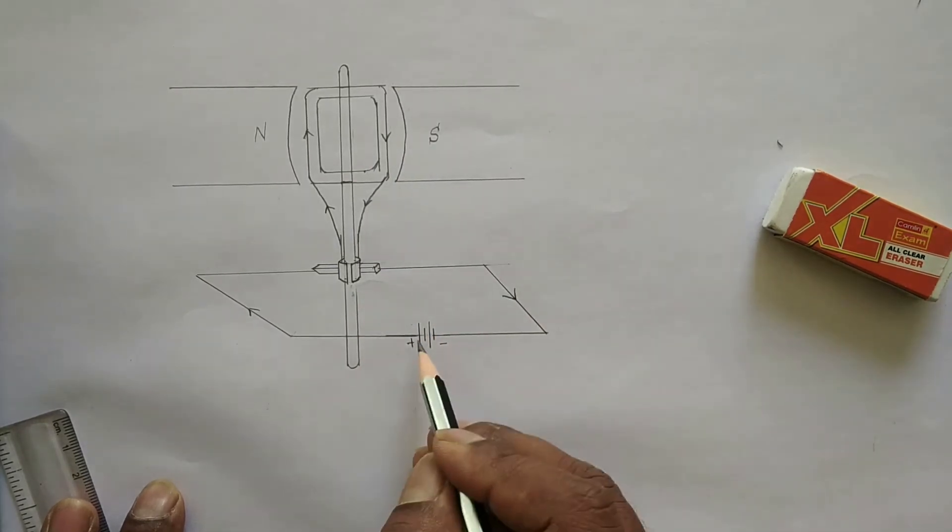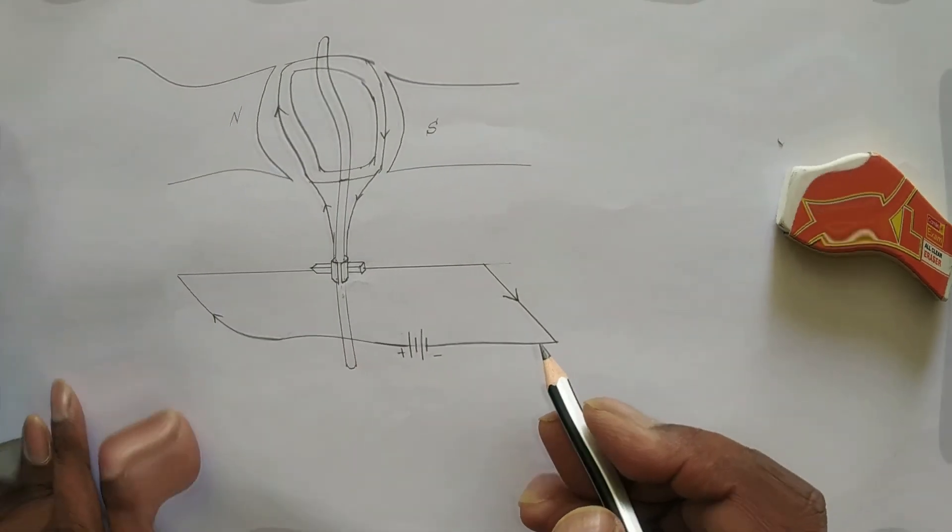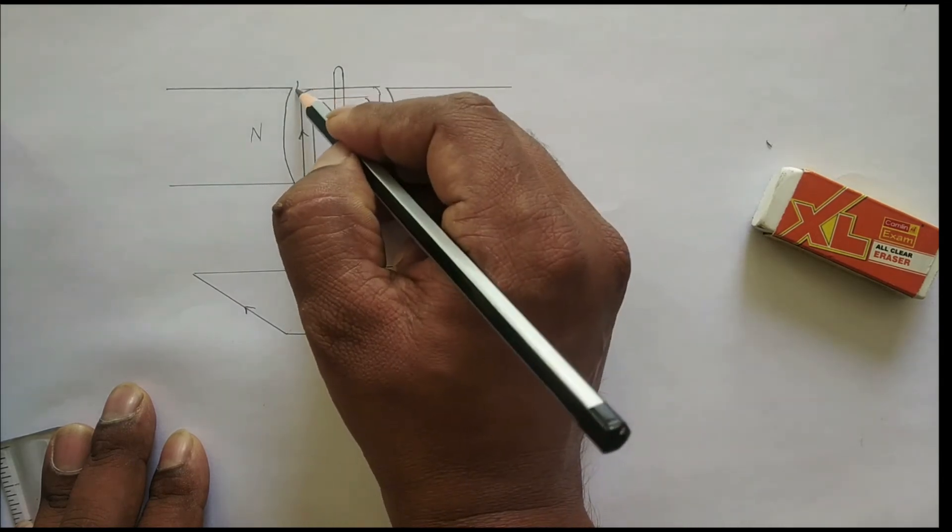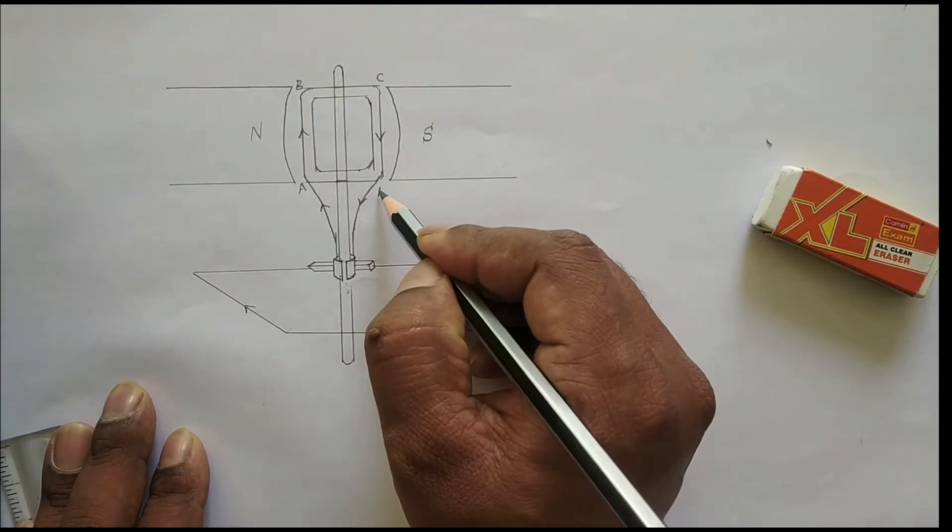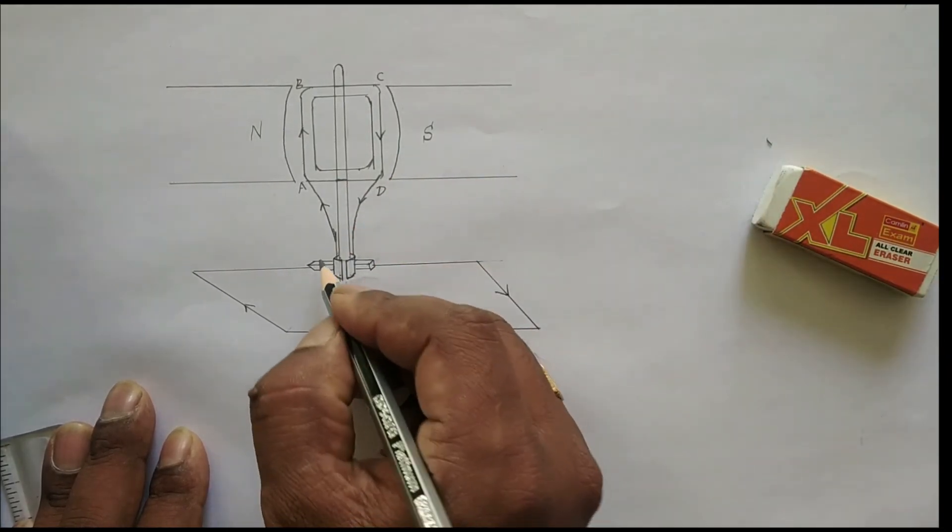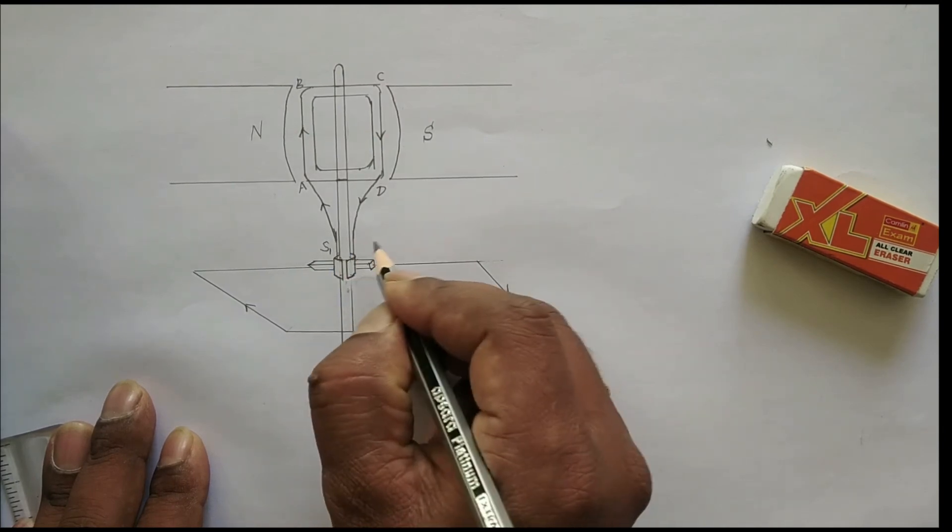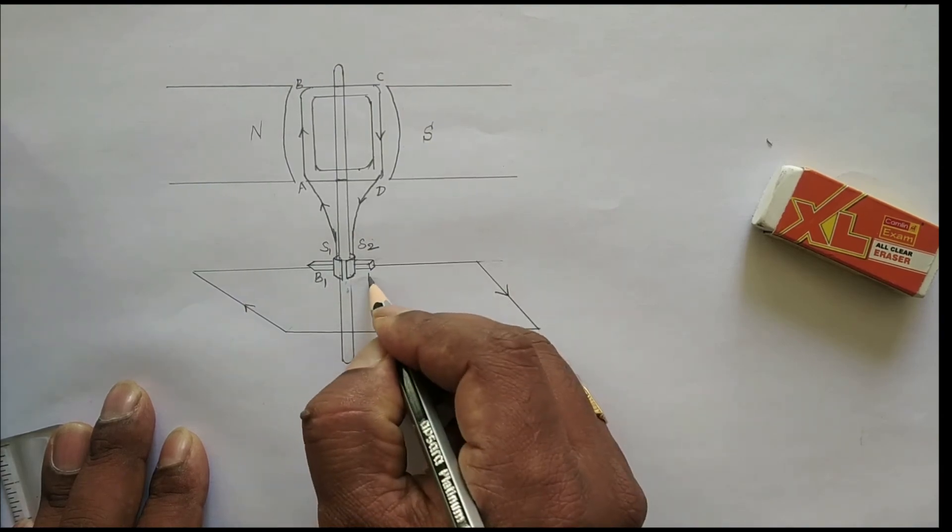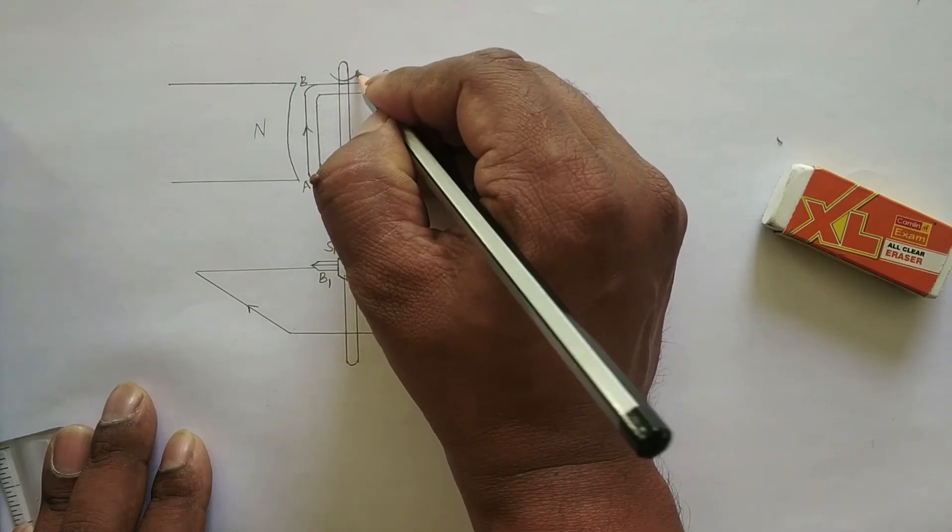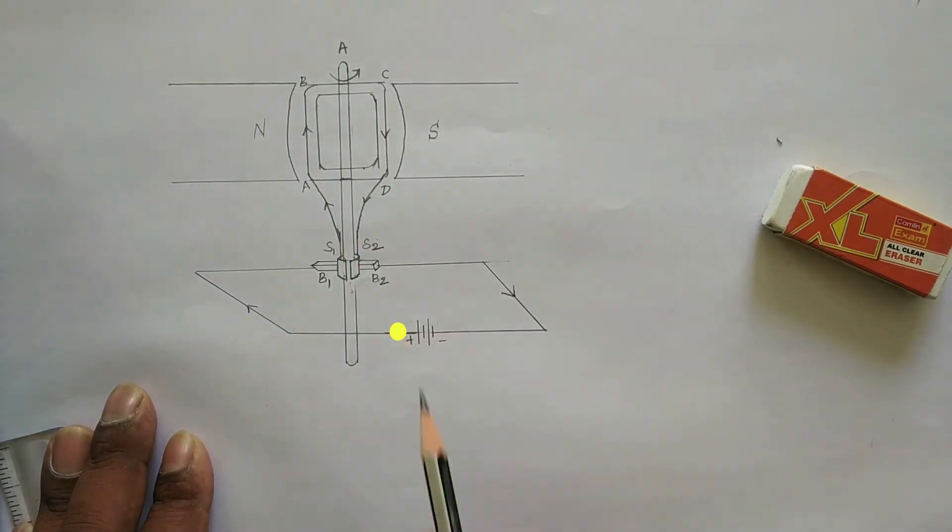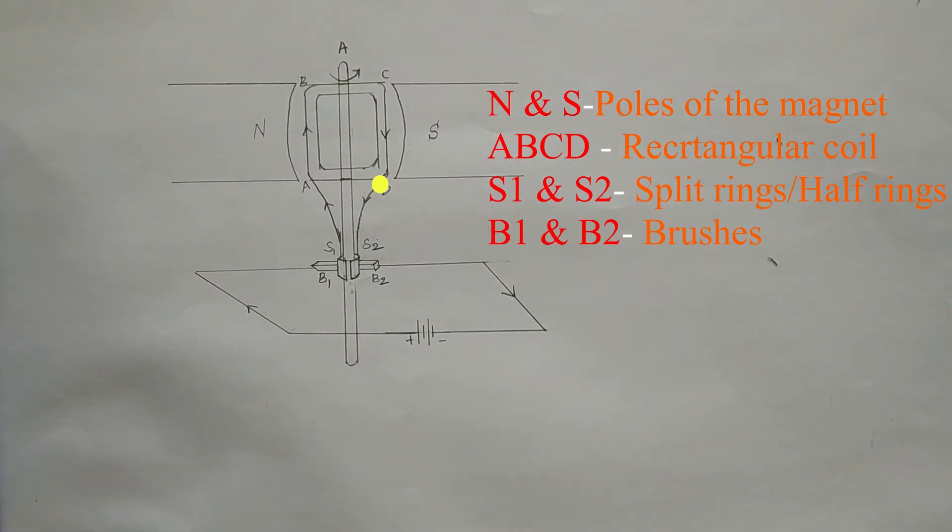Here it completes. Now you have to mark the rectangular coil A, B, C, D. Here are two split rings, S1 and S2. Here are two brushes, B1, and this is the axle A, and these two are powerful magnets. Hope you all understood this.